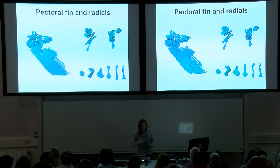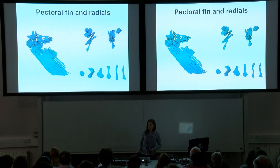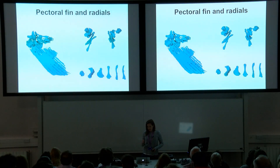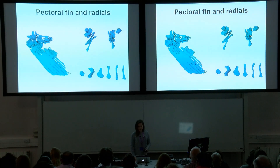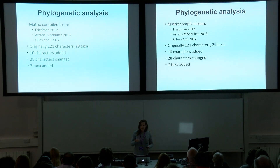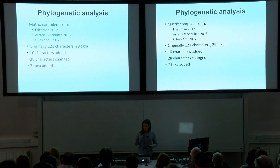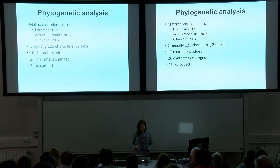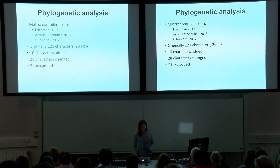Most importantly, we've managed to get a really nice pectoral fin and shoulder girdle with the fin radials, which have not been described very well in Pachycomus before. We managed to get out the individual fin radials and look at their morphology in very close detail. Now that we've got our description, we can look at coding a phylogenetic analysis. My matrix was taken from one constructed by Friedman in 2012, combined with corrections from Arratia and Schultze and some adapted characters from Giles et al. 2017.